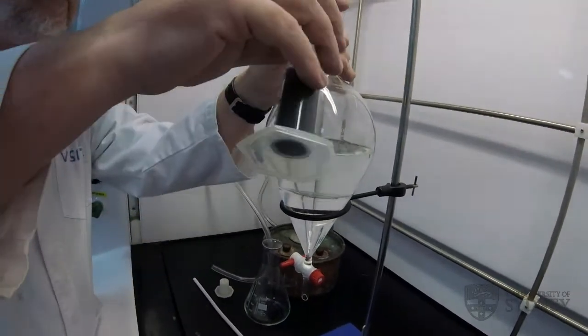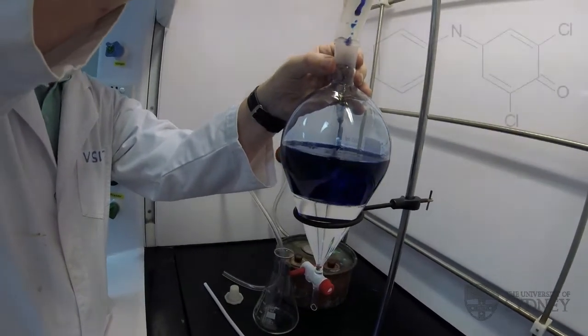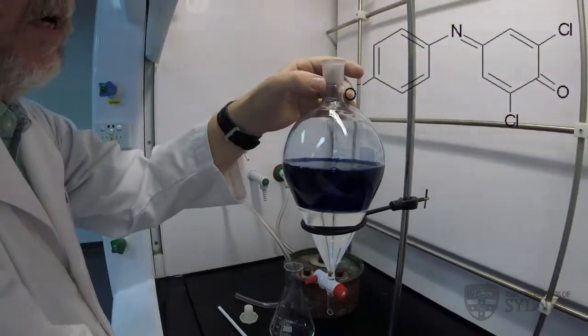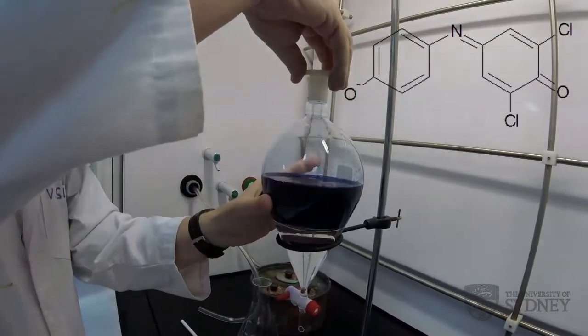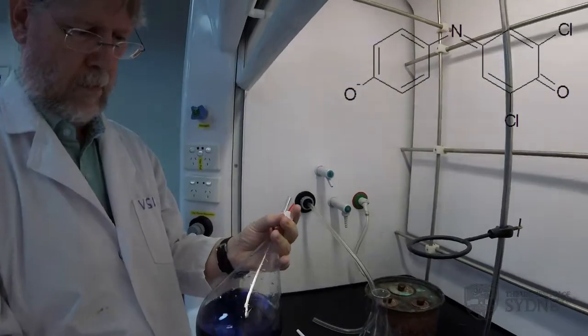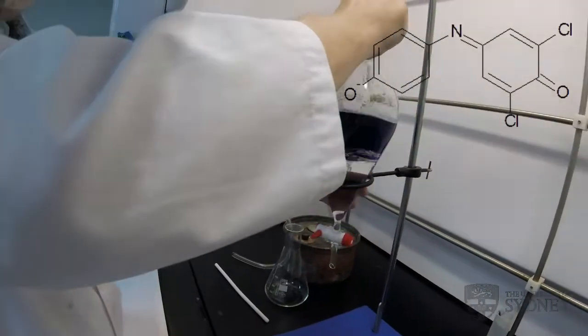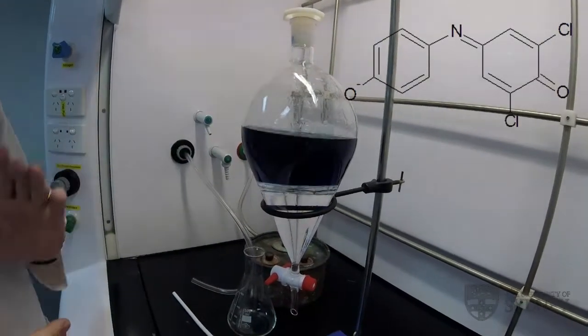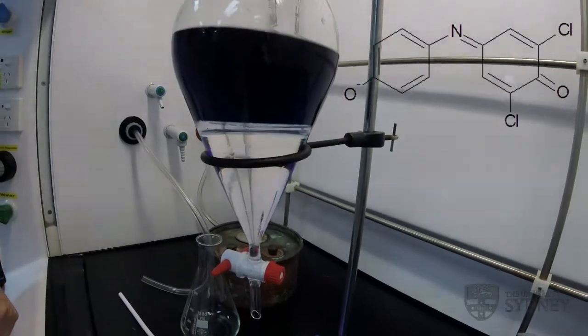So here's my indicator, which you can see is soluble in the water layer. I'll just give that a little mix. So as we'd expect, an ionic species is soluble in water and not soluble in our organic solvent.